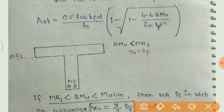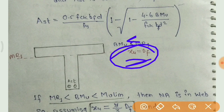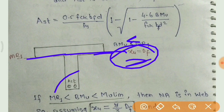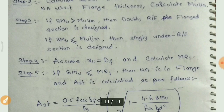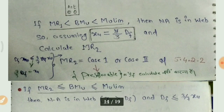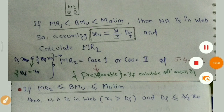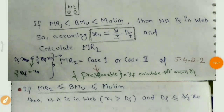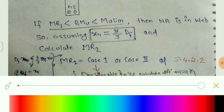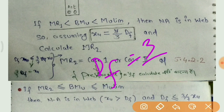Step 4 में क्या है: assume xu is equal to df और calculate MR1 है ना। Diagram में देखो — अगर xu equal to df है तो neutral axis flange के bottom पर आएगा। If MR1 is less than BMU and BMU is less than mu limit, then neutral axis is in web — so assume xu is equal to 7/3 × df।